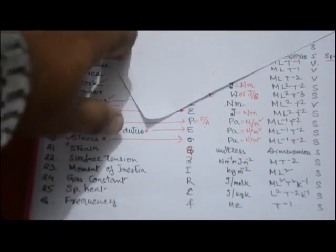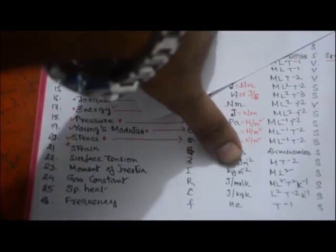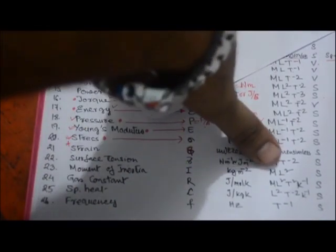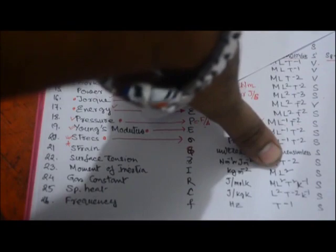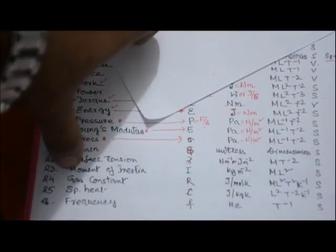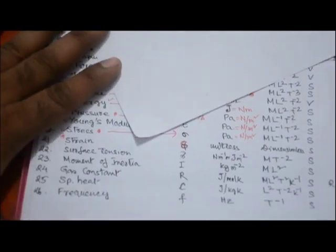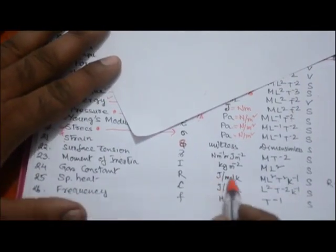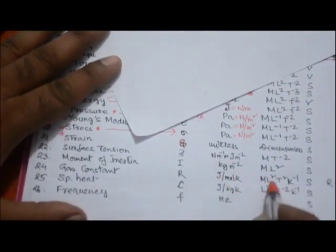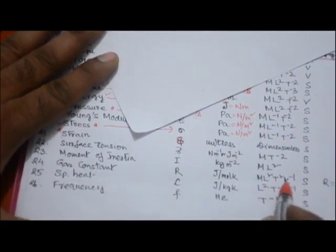Moment of inertia I has unit kg·m² and dimension ML². Gas constant R has unit joule per mole per kelvin, with dimension ML²T⁻²K⁻¹ (or ML²T⁻²θ⁻¹).